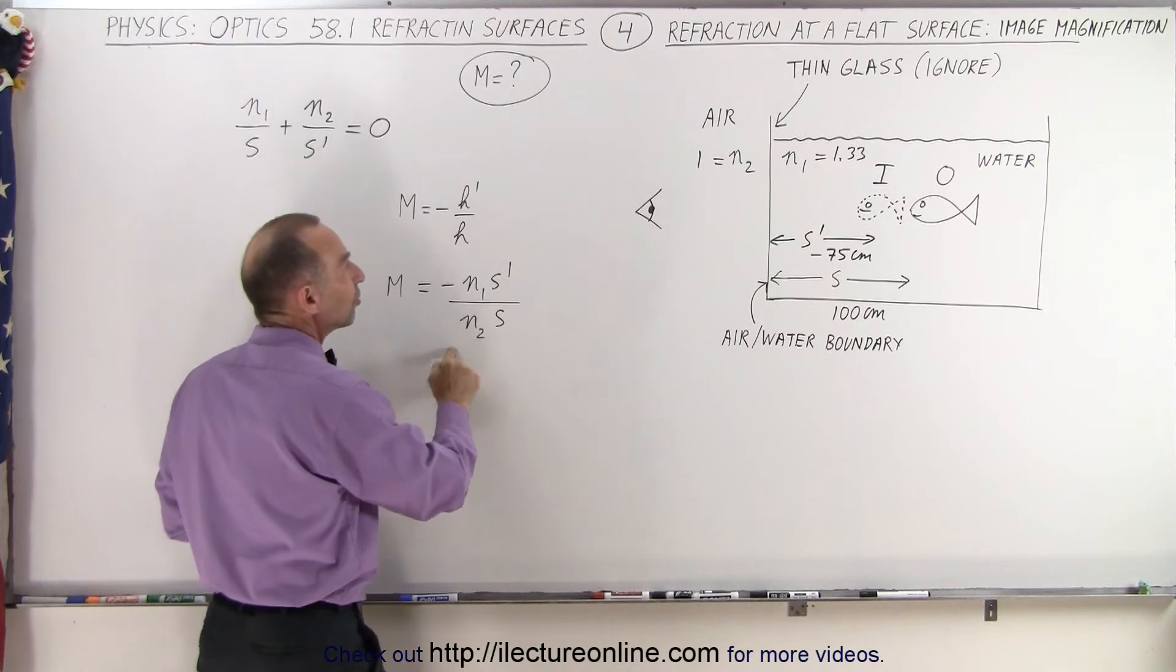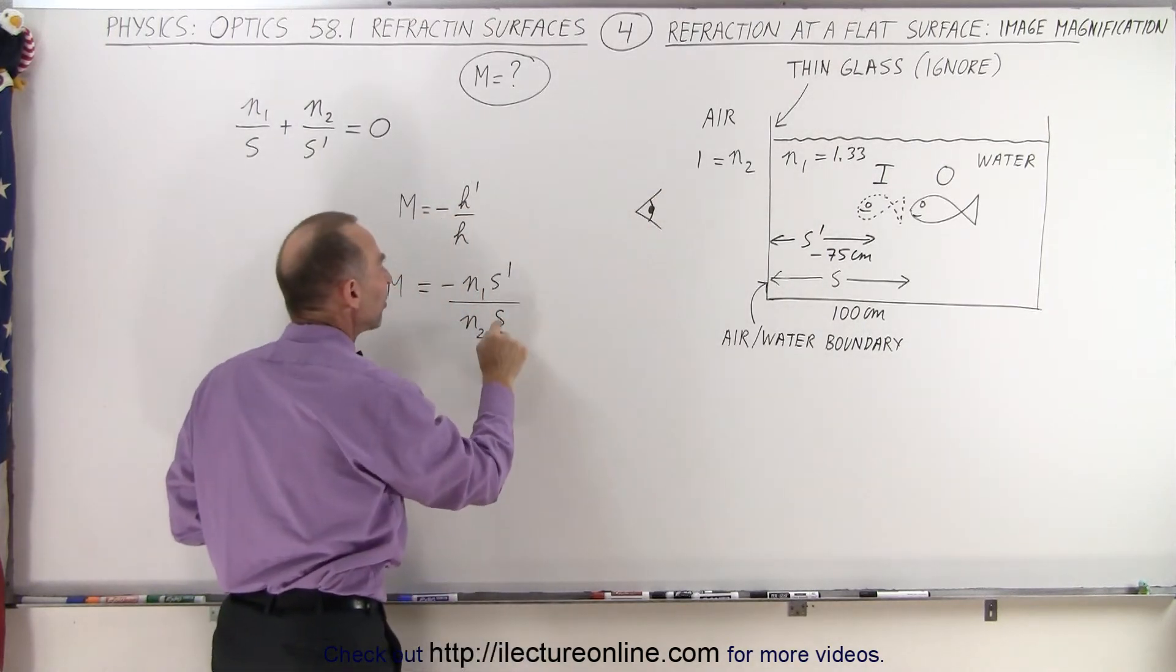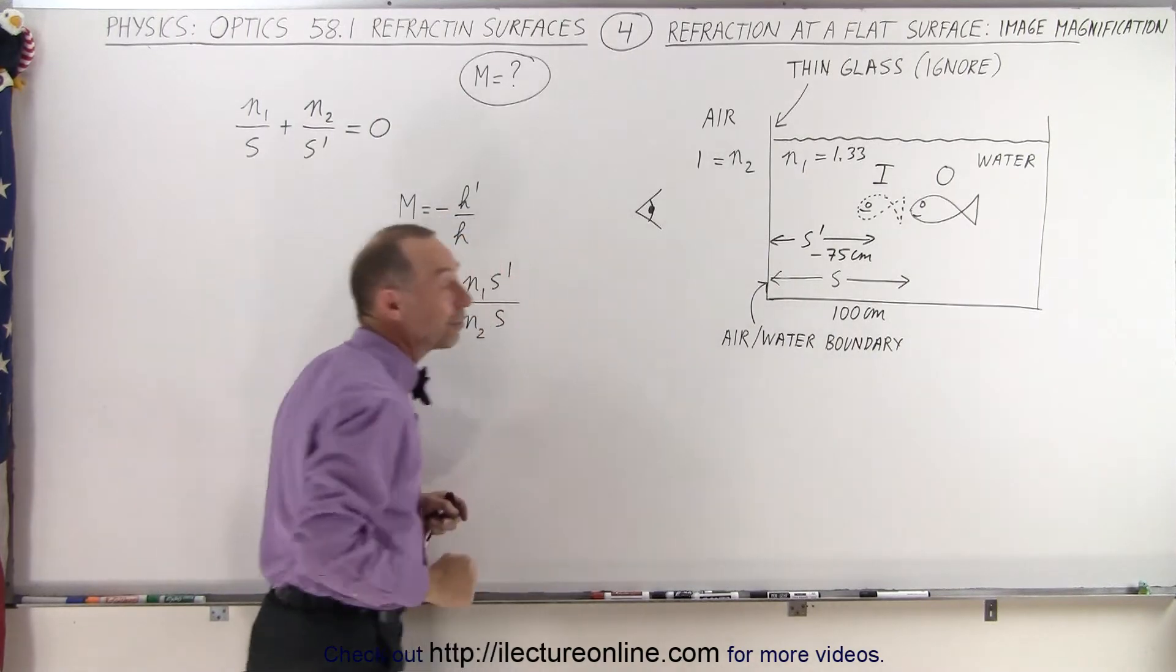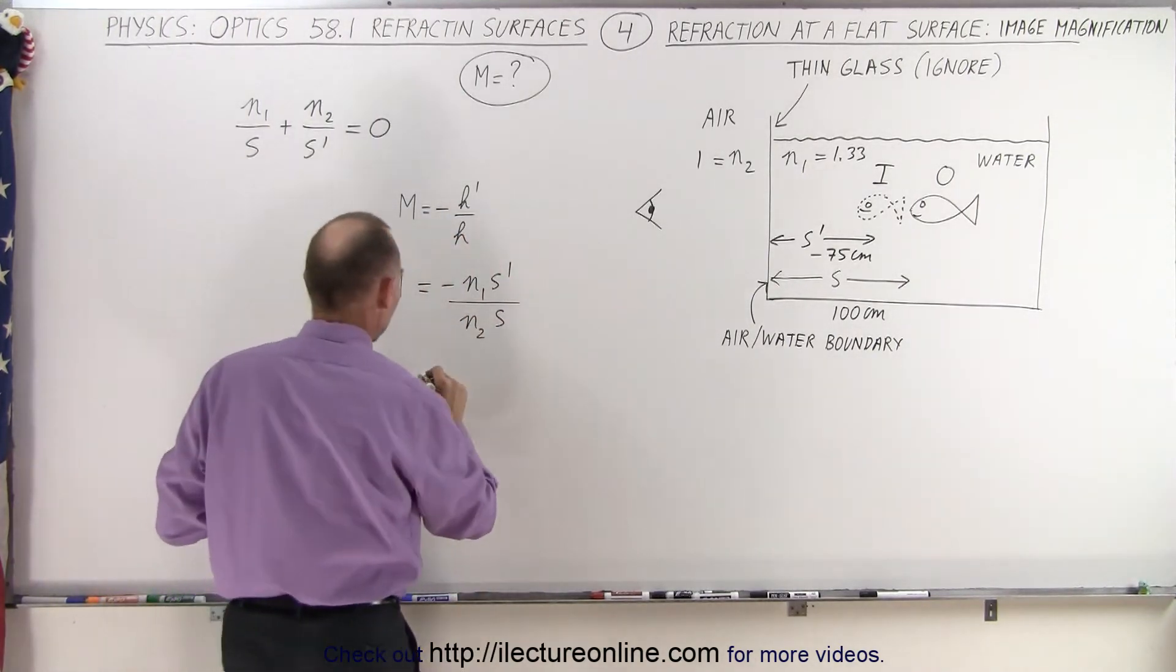We divide that by N2, which is the index of refraction where the observer is at, times the distance to the object from the boundary. So let's bring in some numbers and see what we get. We'll use the same numbers as the last example.